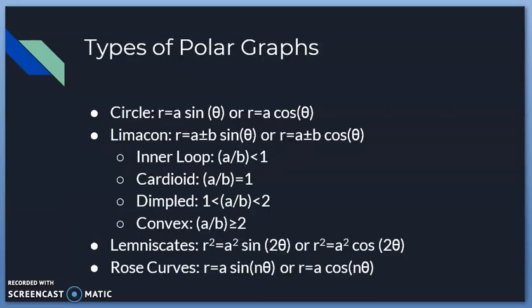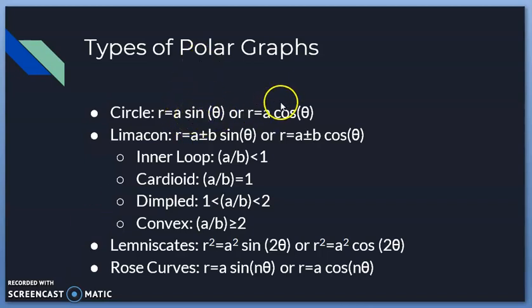There are many types of polar graphs. We have circles, limaçons — there are four different types of limaçons: inner loop limaçons, cardioids, dimpled limaçons, and convex limaçons. There are also lemniscates and rose curves. All of these can be written using either sine or cosine; the only difference is placement on the polar plane.